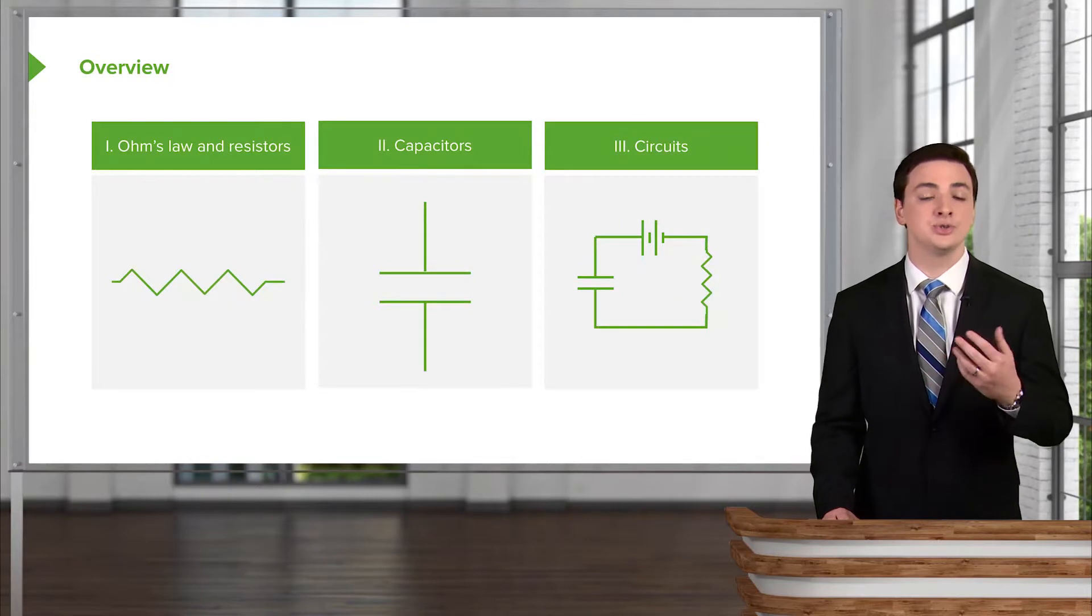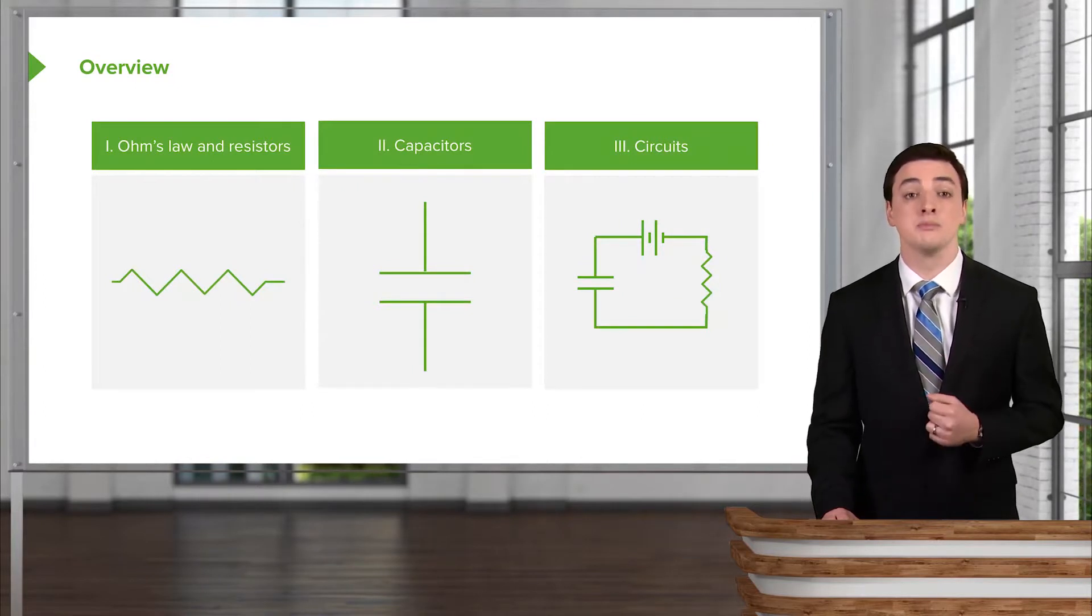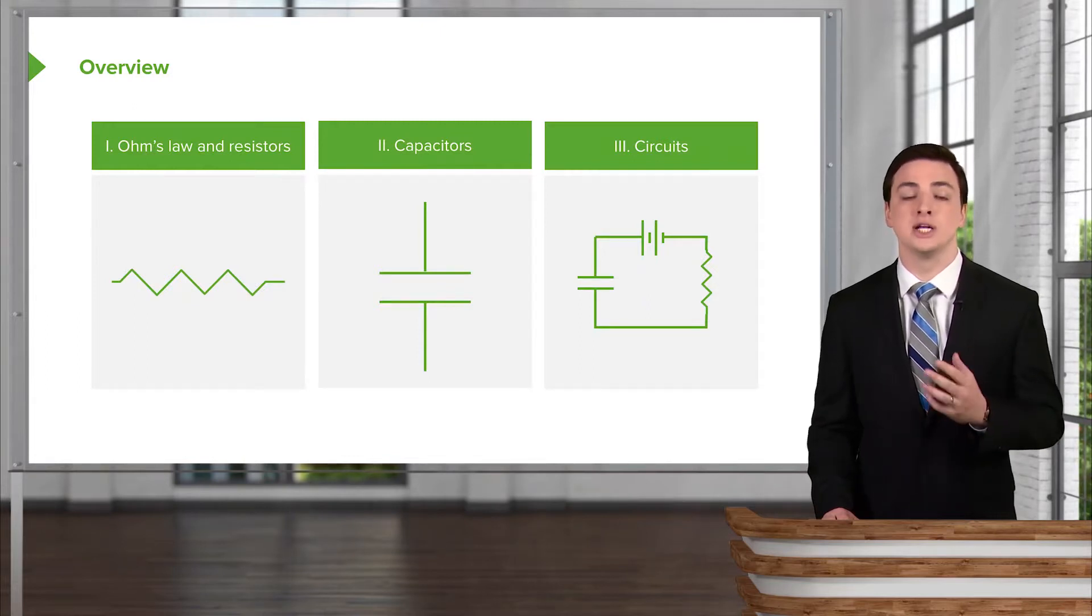We'll start this by first introducing the two main ingredients of a circuit that we'll need to remember and know how to deal with. Those are resistors, so we'll talk about Ohm's law and resistors now.